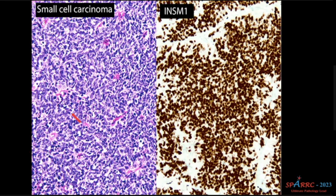This is small cell carcinoma. Whether it is from the lung, pancreas, cervix, stomach, or any organ — small cell carcinoma will be positive for INSM1, with nice nuclear positivity. And the other marker for small cell carcinoma is POU2F3.